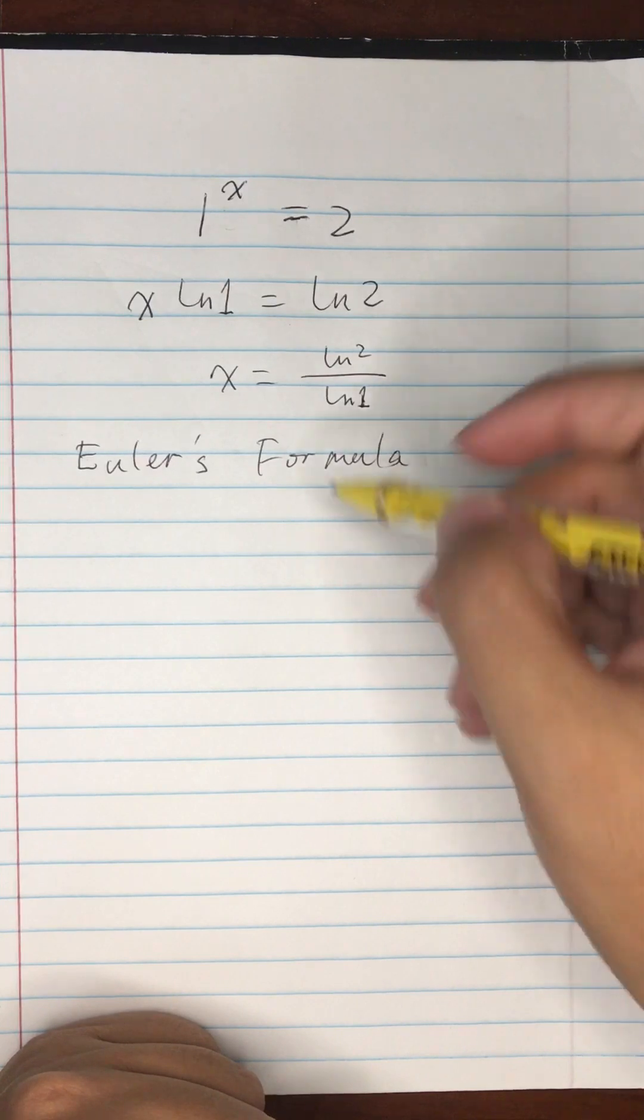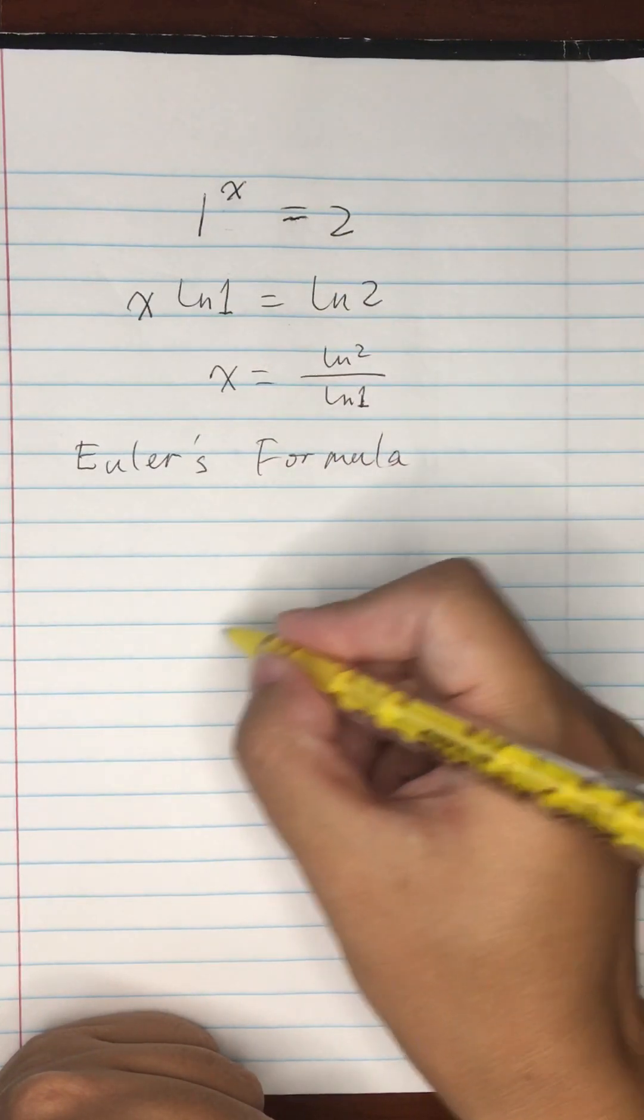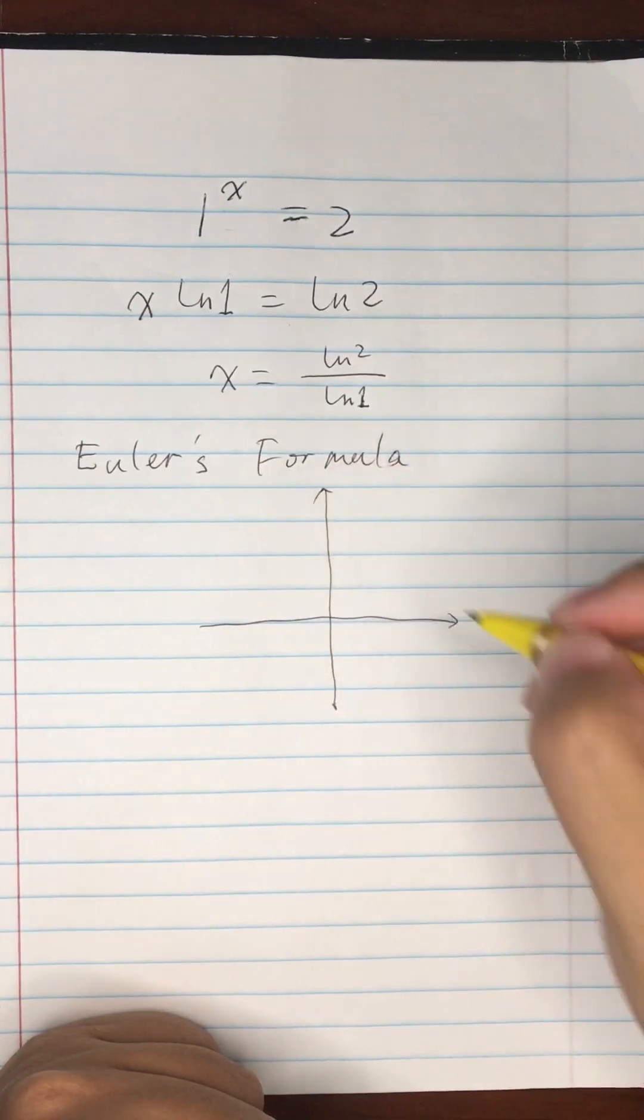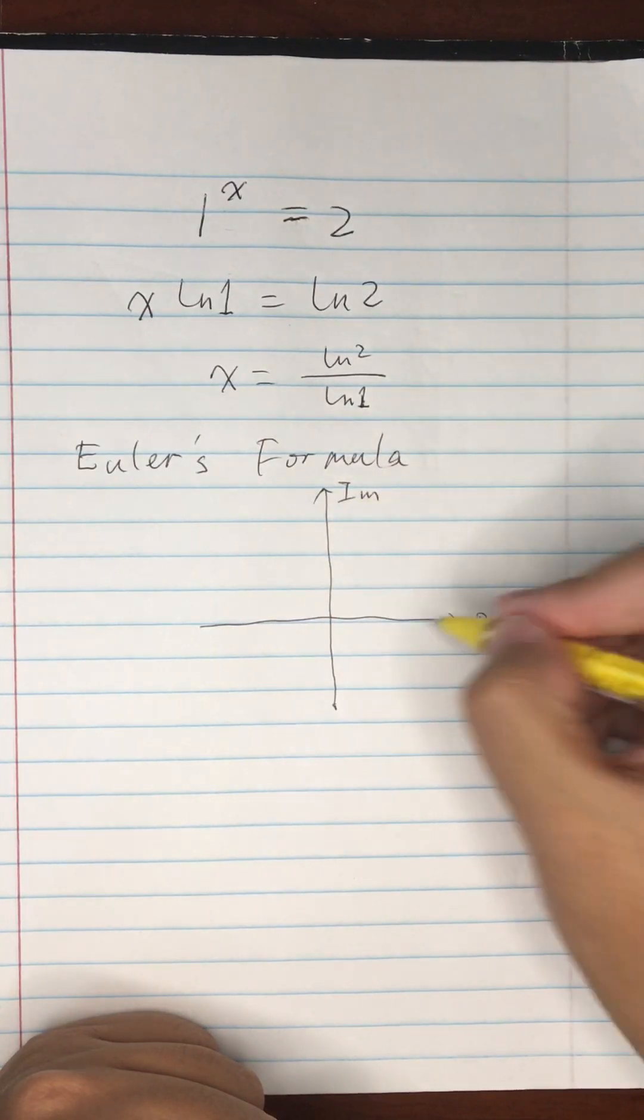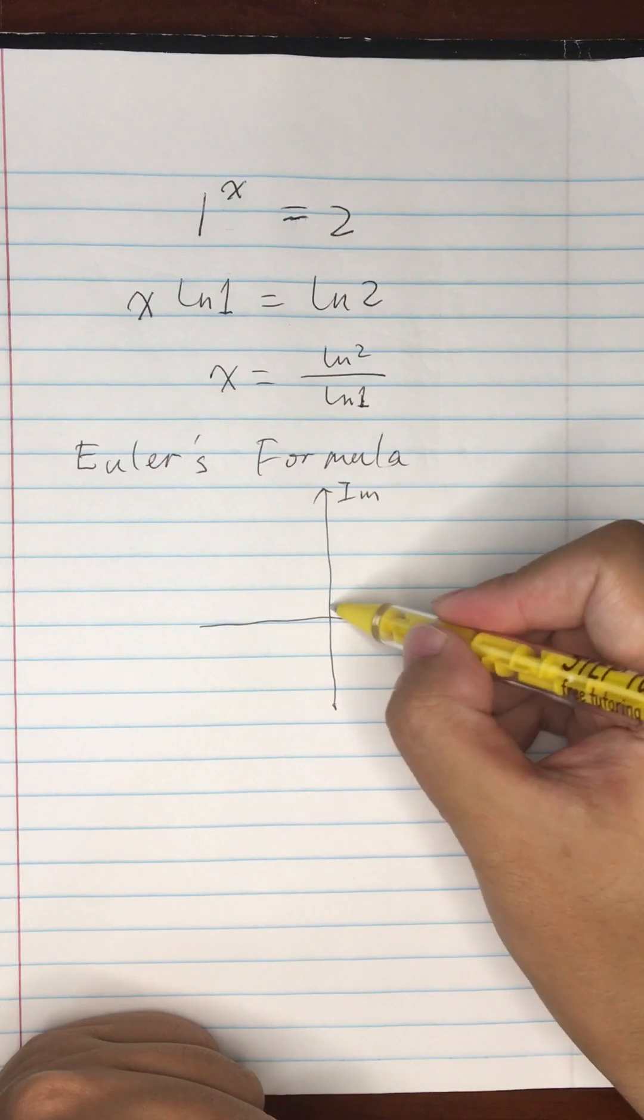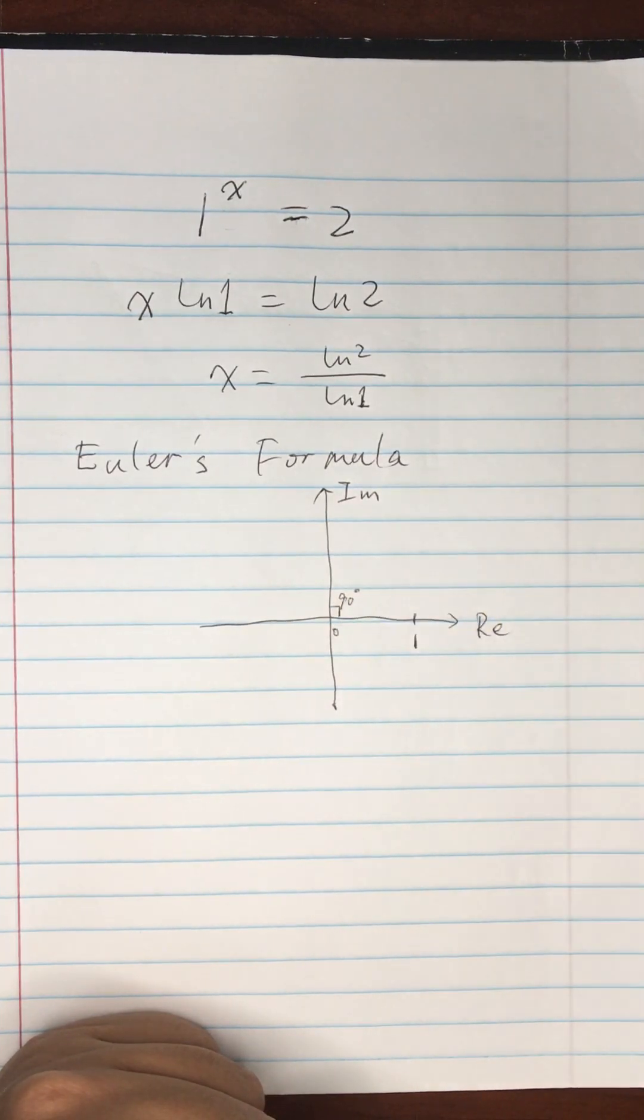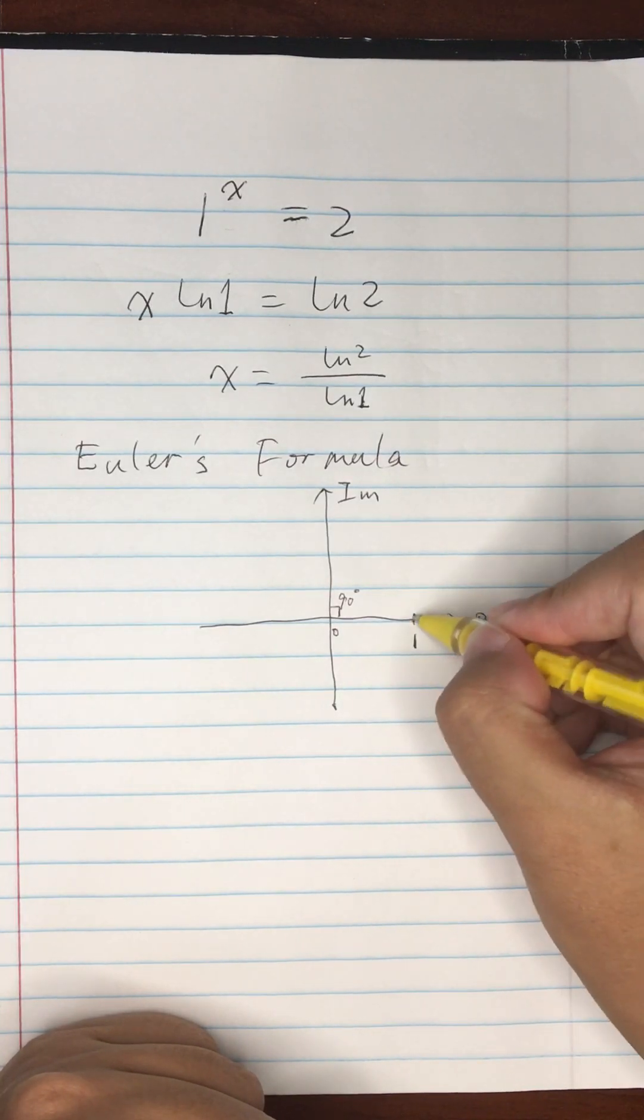In the complex domain, what exactly is 1? Suppose we have the complex plane. This is the real axis, this is the imaginary axis. 1 is over here, this is 90 degrees, this is the origin.